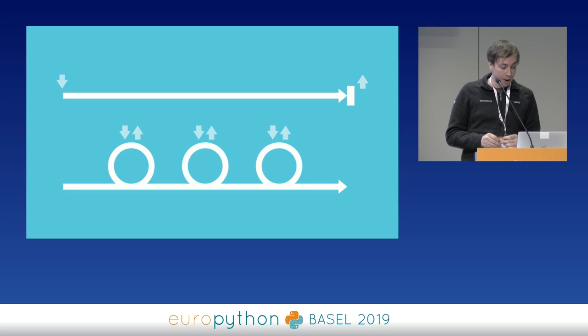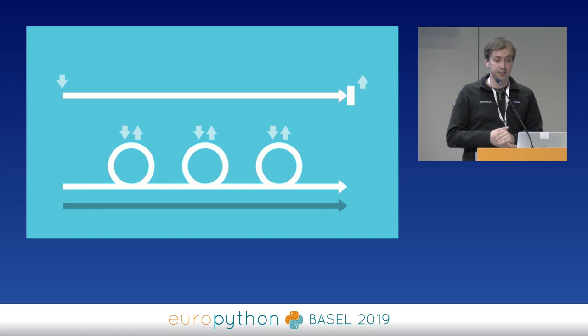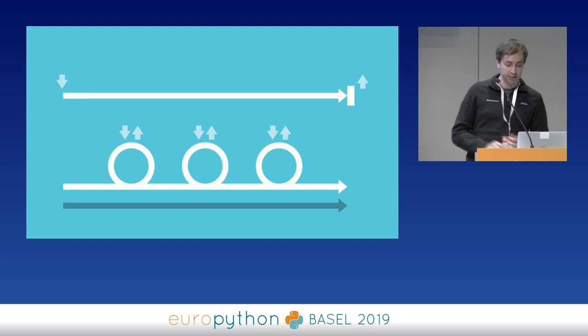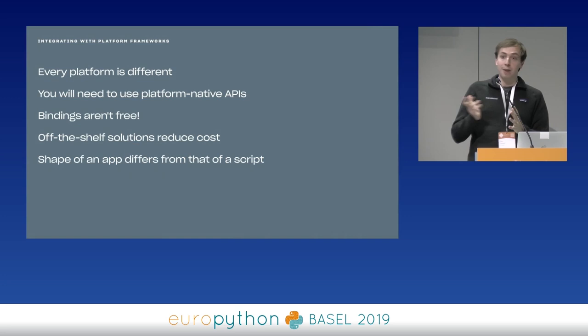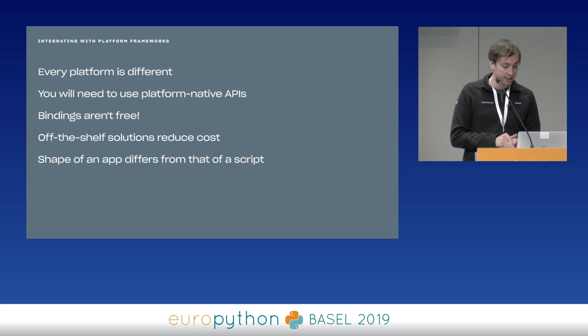While your main thread is busy running that loop, the actual work your app does happens on another thread or in some background system. All of these GUI libraries typically have helpers to help you manage threading. So to recap: every platform is different, you'll probably need platform-native APIs, bindings are not free but open-source solutions can really reduce maintenance costs, and apps are not like scripts — you're probably going to be multi-threaded.